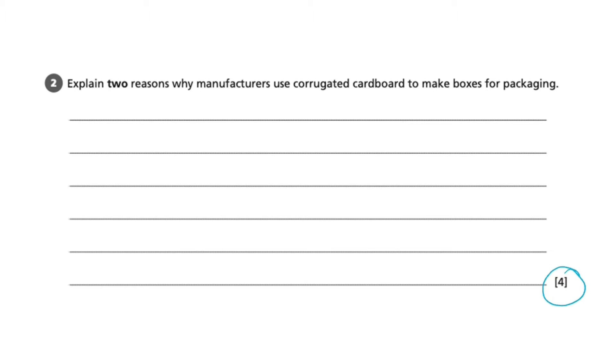We can see in the bottom right hand corner that this question is worth four marks. We can highlight the key words of the question. Here I would highlight corrugated, boxes, and packaging.